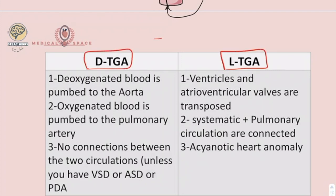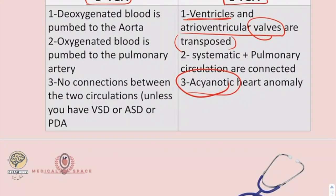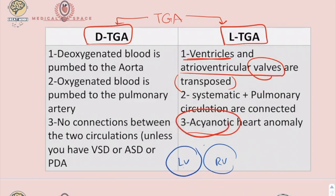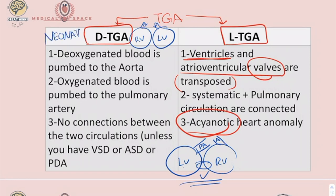There are two types of Transposition of Great Arteries: LTGA and DTGA. LTGA is an acyanotic heart anomaly and is less severe than DTGA; in it, the ventricles and atrioventricular valves are transposed — the left ventricle pumps into the pulmonary artery and the right ventricle pumps into the aorta, but the connection between the two circulations is normal. In DTGA, the aorta rises from the right ventricle on the right side and the pulmonary artery rises from the left ventricle. These patients present in the neonatal period, making DTGA the most common congenital cyanotic heart defect in neonates.